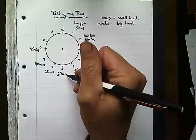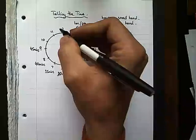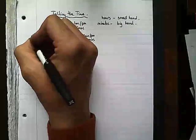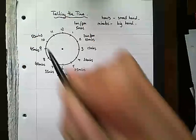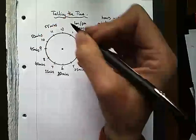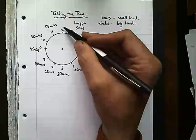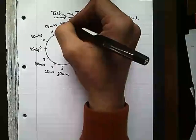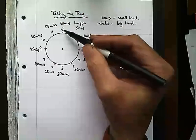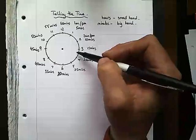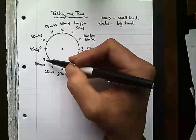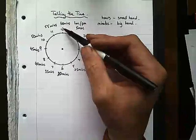We say half past when the big hand is at six. Then fifty minutes at ten, fifty-five minutes at eleven, and then we're back to sixty minutes - which is one full hour - at twelve. So as the big hand goes around the clock you're adding minutes each time: 5, 10, 15, 20, 25, 30, 35, 40, 45, 50, 55, and then that's one hour.